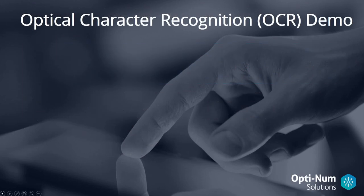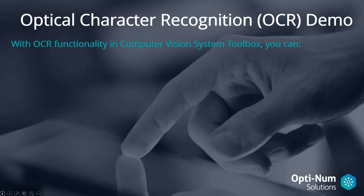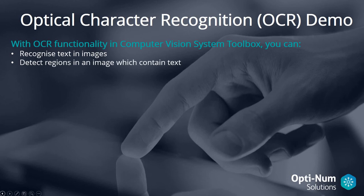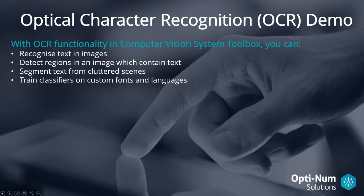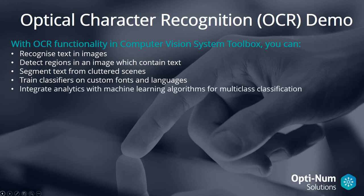We're going to have a demonstration using optical character recognition with the Computer Vision System Toolbox in MATLAB. With OCR functionality in the toolbox, you can recognize text in images, detect regions in an image that contain text, segment text from cluttered scenes, train classifiers on custom fonts and languages, and then integrate our analytics with machine learning algorithms for multi-class classification.